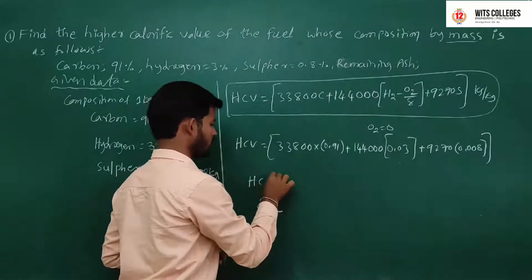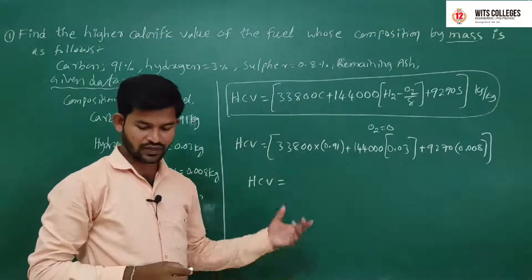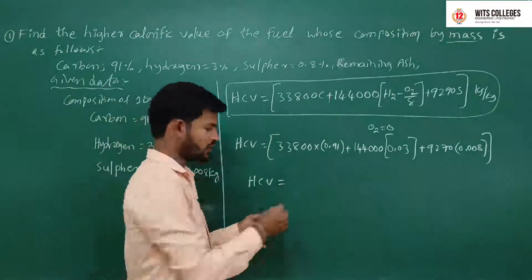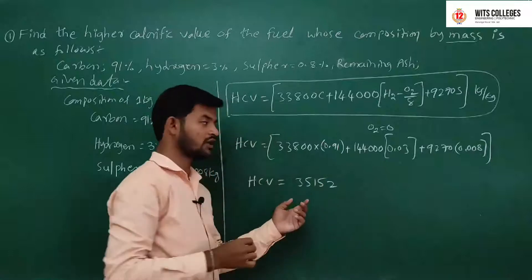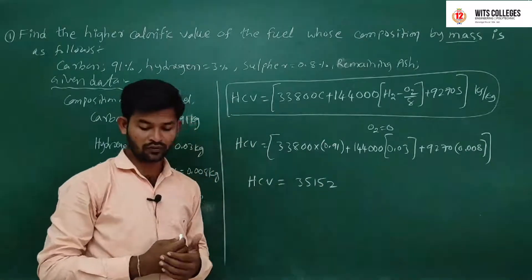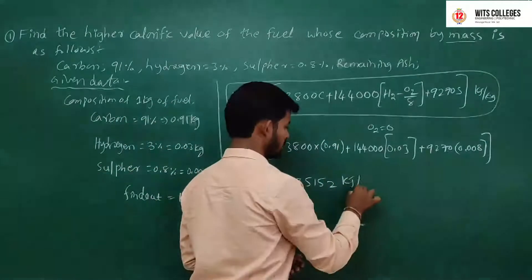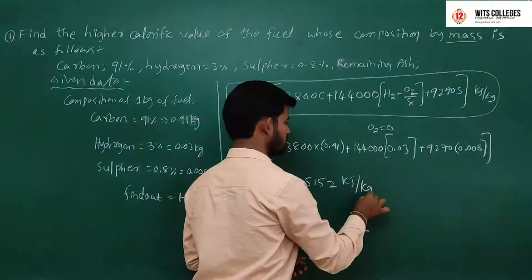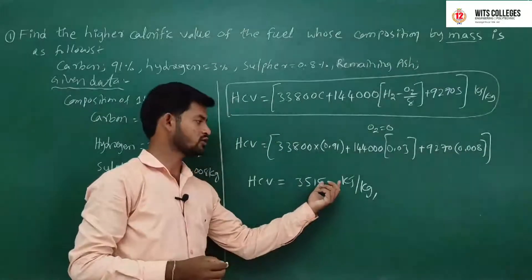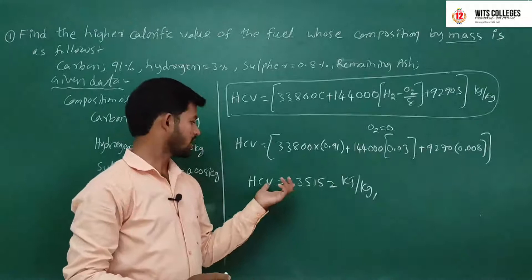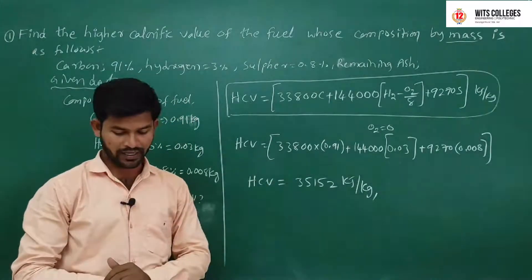The higher calorific value equals 35,152 kilojoules per kg. So 35,152 kJ/kg of heat is the higher calorific value obtained.